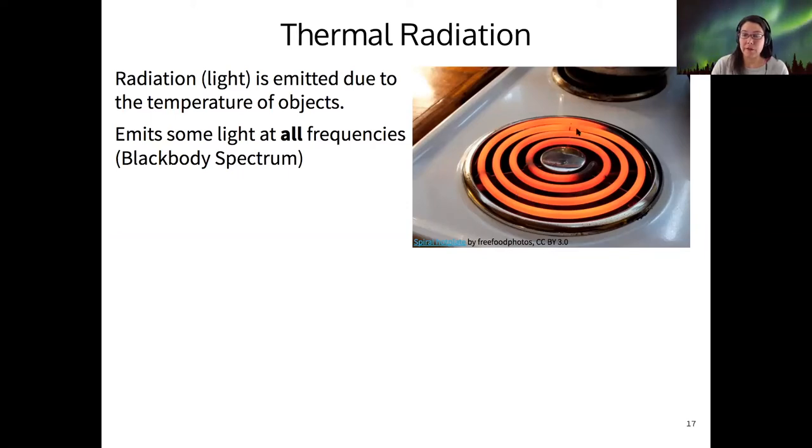So if you have an electric stove burner, then you know that if you turn it on, it will start in its dark color, and then it'll glow brighter and brighter oranges, and then maybe yellow even if you get it hot enough as it gets hotter.